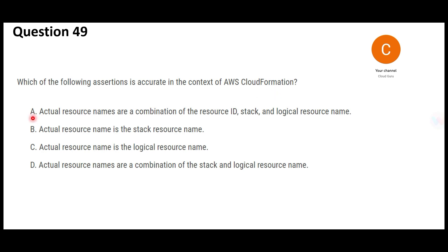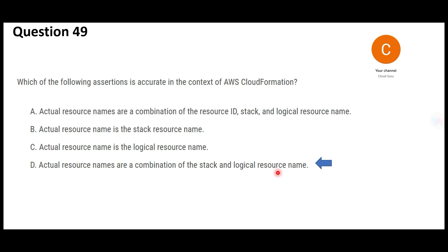The next question asks what is accurate in the context of AWS CloudFormation resource names — essentially the naming convention. Option D is correct: when you create a resource, the actual resource name is a combination of the stack name and the logical resource name. It is not just the stack name alone, and not just the logical resource name alone — it is a combination of both. The resource ID is probably created automatically in the background.